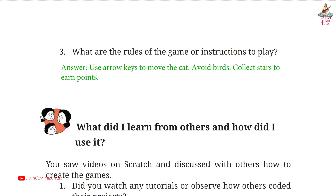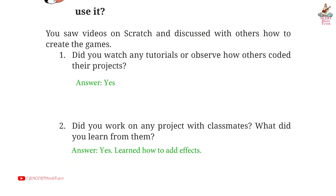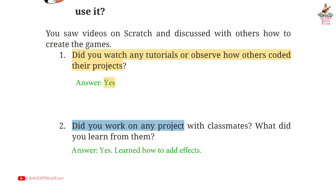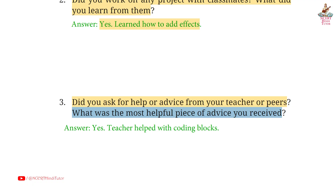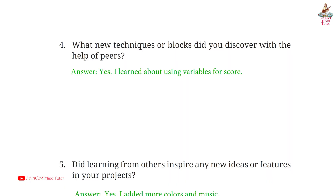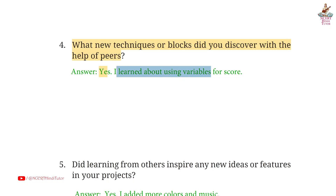Page 98. Question 3: What are the rules of the game or instructions to play? Answer: Use arrow keys to move the cat. Avoid birds. Collect stars to earn points. Question 1: Did you watch any tutorials or observe how others coded their projects? Answer: Yes. Question 2: Did you work on any project with classmates? What did you learn from them? Answer: Yes. Learned how to add effects. Question 3: Did you ask for help or advice from your teacher or peers? What was the most helpful piece of advice you received? Answer: Yes. Teacher helped with coding blocks.